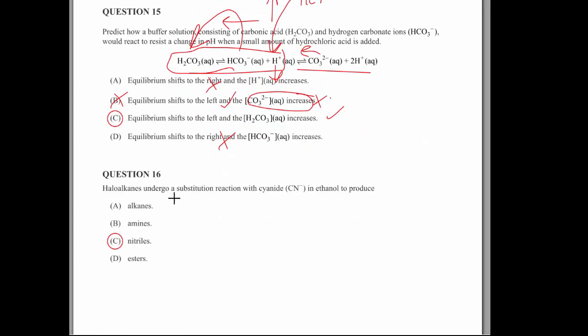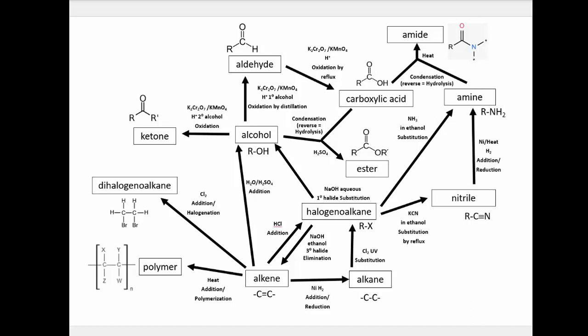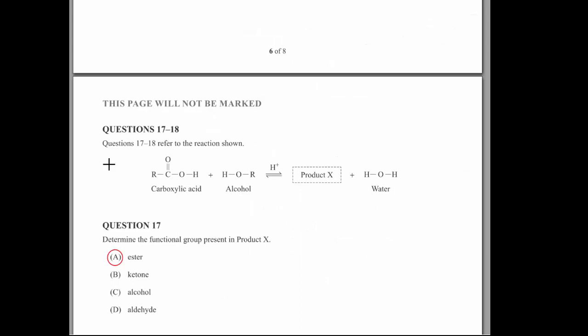Question 16. Halogen alkanes undergo substitution reaction with cyanide. So amines need an NH3 plus added to them. You can't add a nitrogen and have this. It has to be one of these functional groups that have a nitrogen in them. And you've memorized your reactions page. So I'm just going to take it from that, that you know it. And that's the reactions page that I would expect you to learn with that bit there.